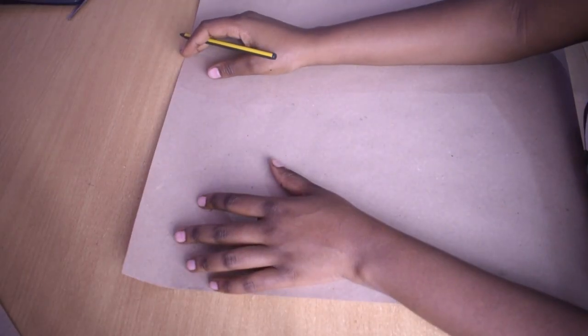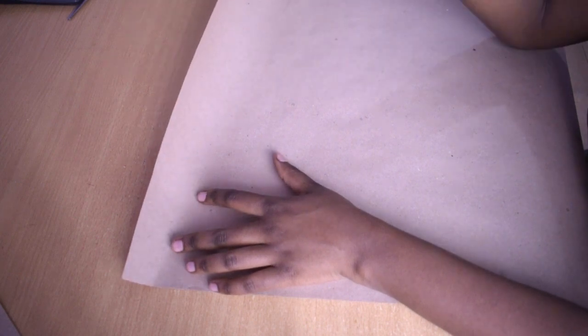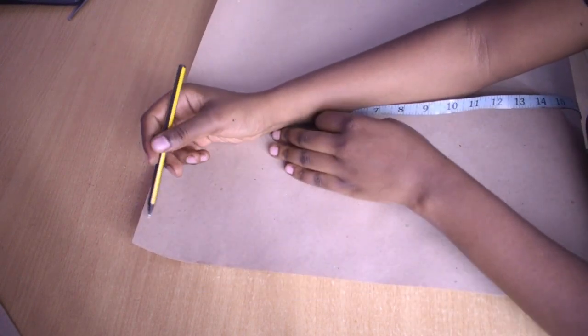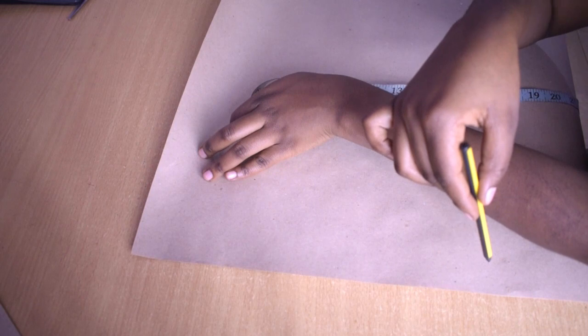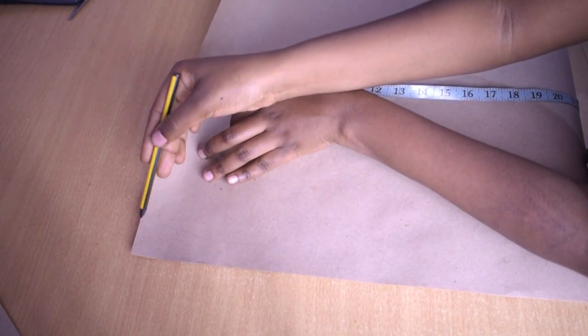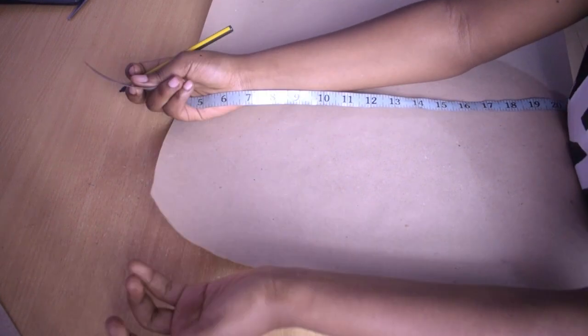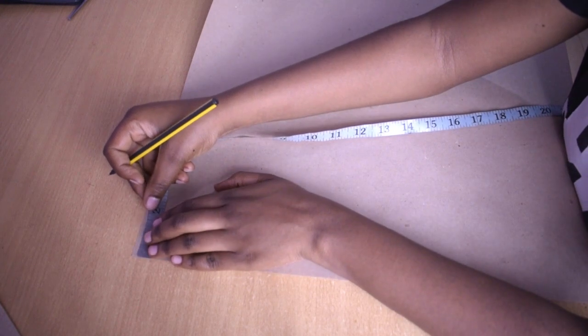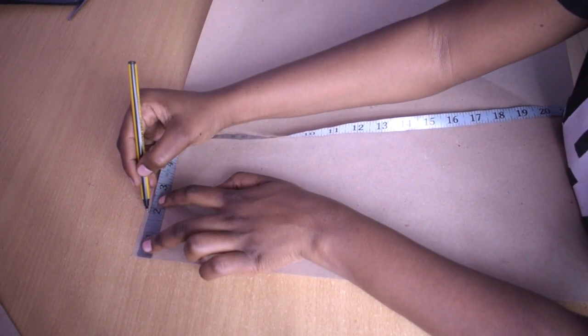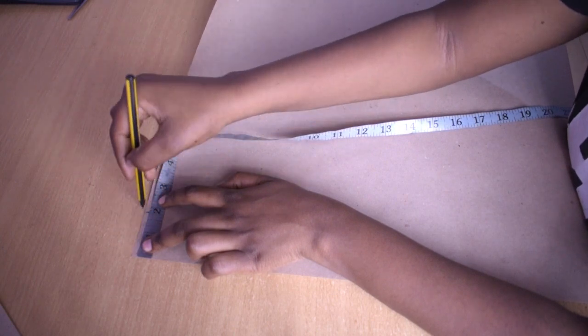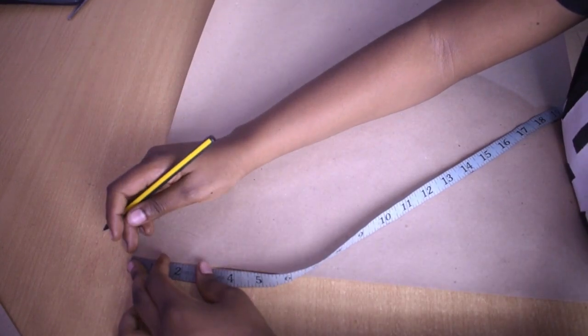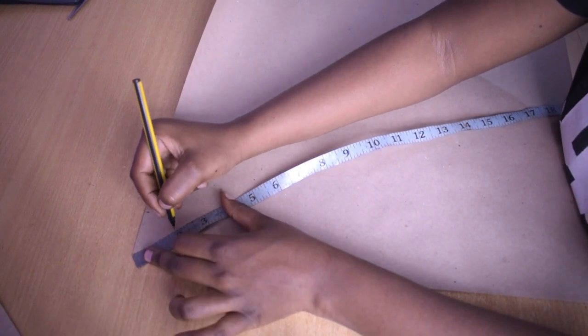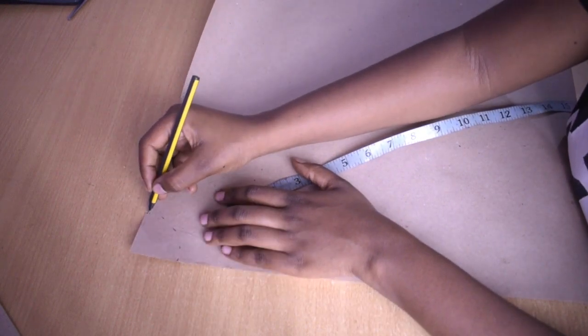So you can do this directly on the fabric, but I will not do it for the purposes of demonstration. I will do it on paper because I think it is easier to understand that way. So you want to make two lines at a 90 degree angle. So the 1.8 you got, from this point measure 1.8 this way and this way, and also all round. Then mark it all.